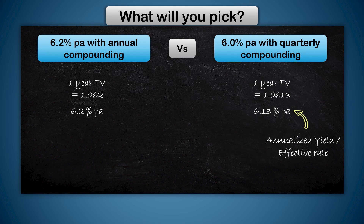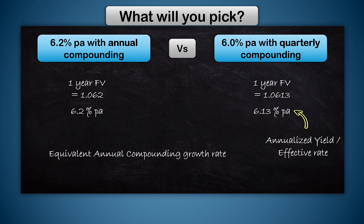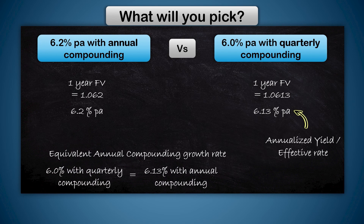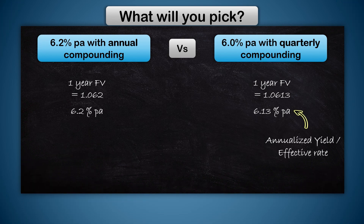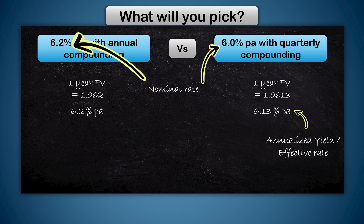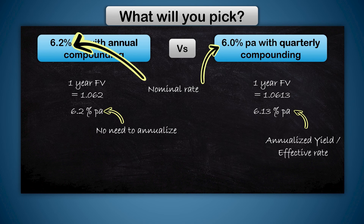Basically, you have converted from quarterly compounding to the equivalent annual compounding rate. What this means is that 6% with quarterly compounding is exactly the same as getting 6.13% with annual compounding. The effective rate will adjust for the difference in compounding frequency and bring them all to an annual compounding rate. This is very helpful when you want to compare different schemes with different frequencies of compounding. The unadjusted rate quoted by the bank — like 6.2% or 6% — is called the nominal rate. Nominal means whatever is mentioned on paper. There is no need to find the annualized rate when it's already annual compounding; annualized rate makes sense only when the frequency is more than once a year.